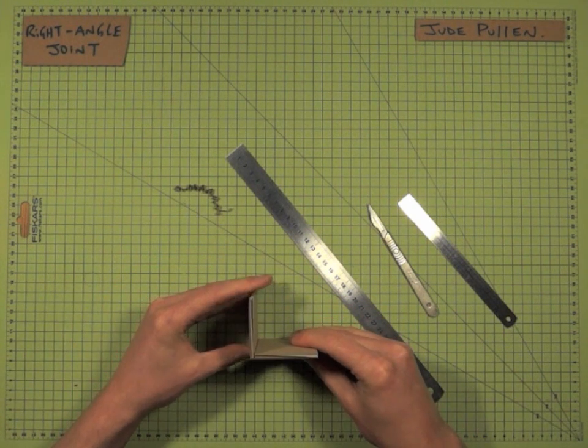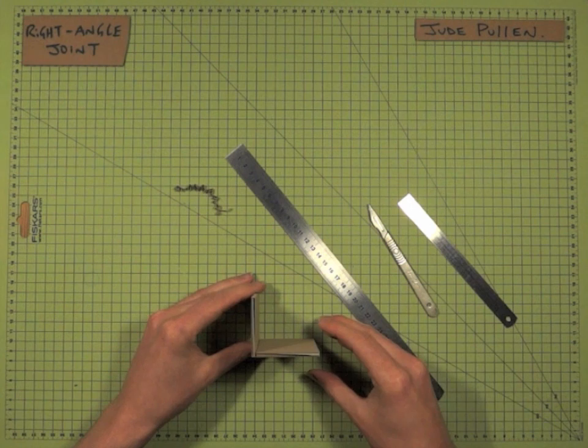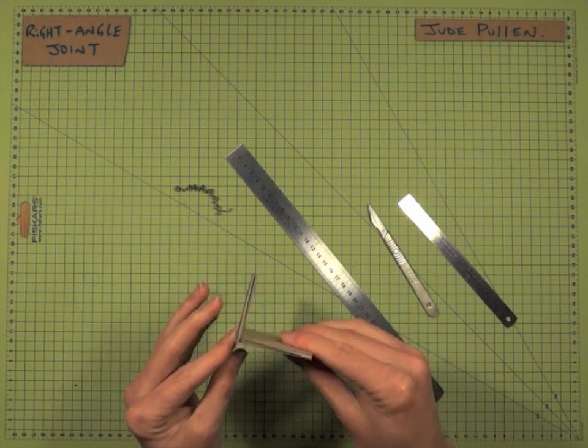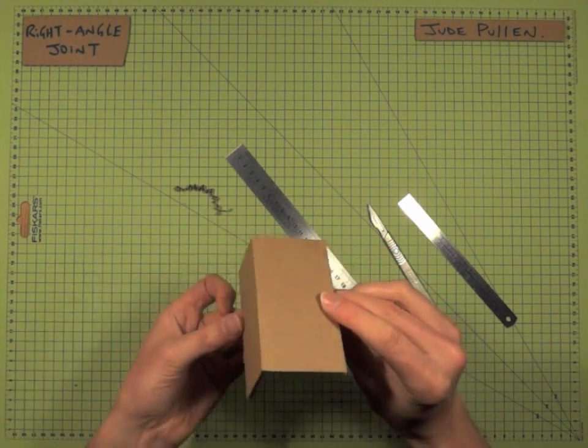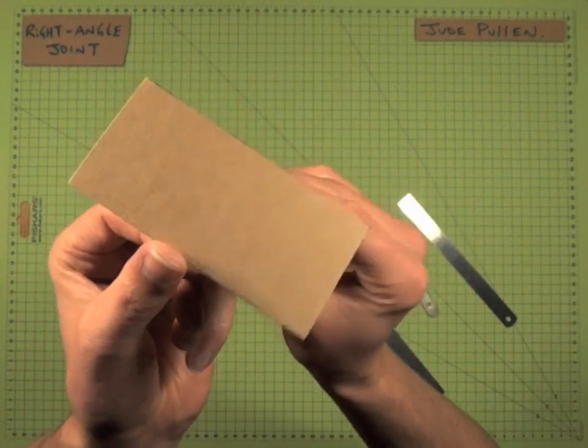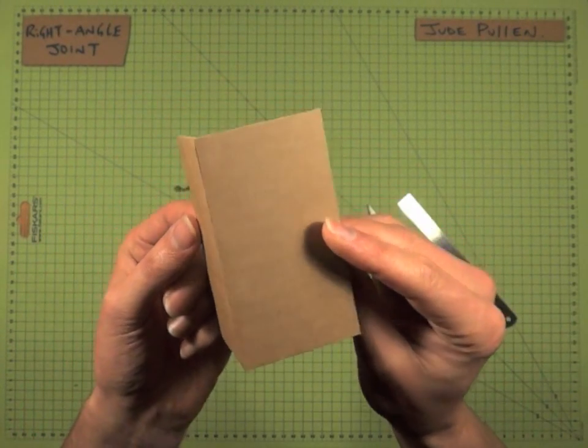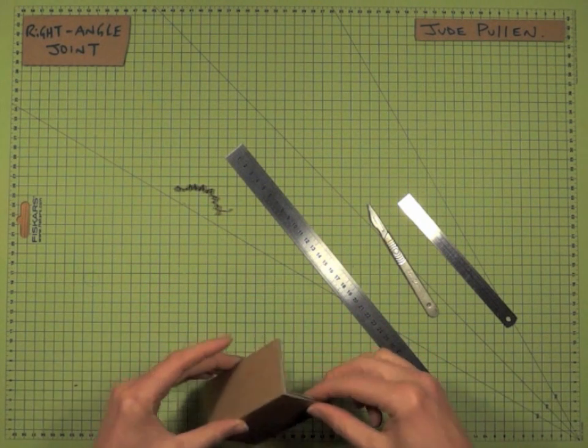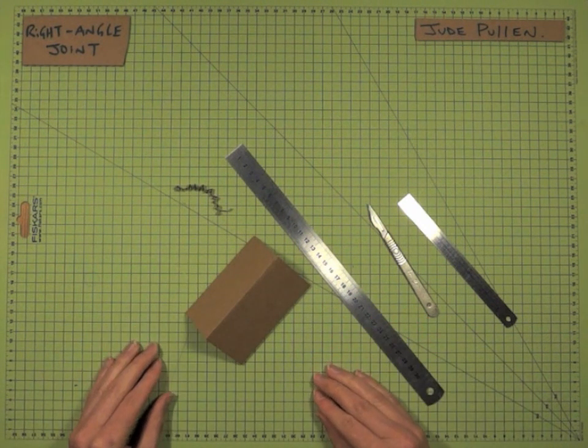And before it completely sets, just make sure that we're square. You can either use a surface like this, which has grids on, or to be honest, quite often you just end up eyeballing it to see if it's good. So there we have our joint, which is certainly a good enough presentation for any sort of model that you're doing. So that's the basic right-angled joint.